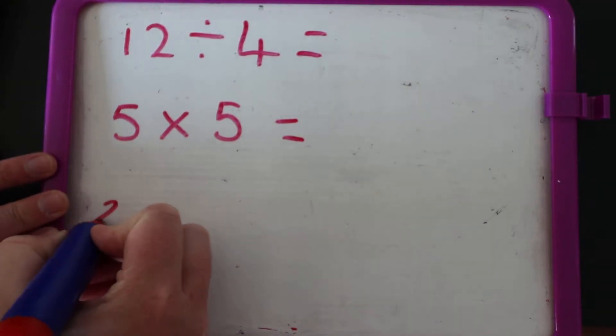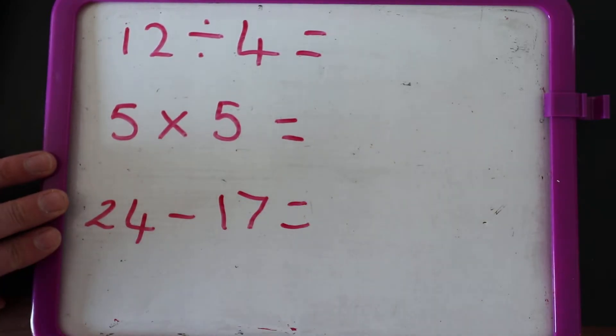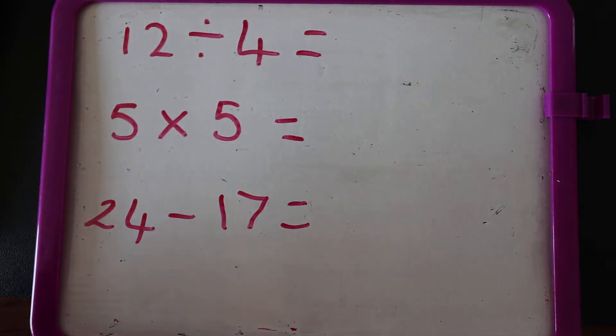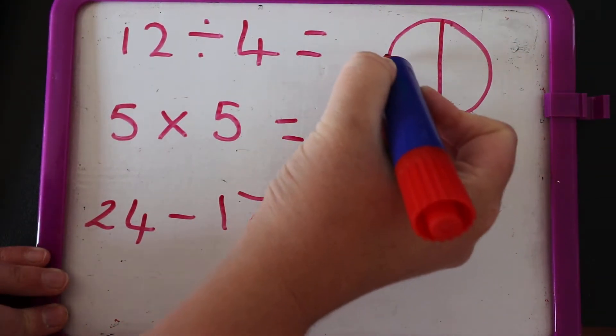And let's do 24 subtract 17, that's a tricky one. Okay, pause the video, have a go. Okay, 12 shared into four groups, so I'm going to draw my four groups, I'm going to draw my pizza and share it.